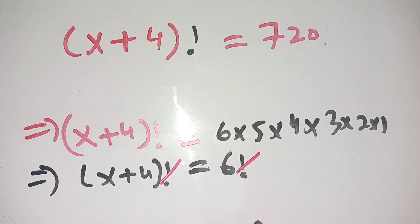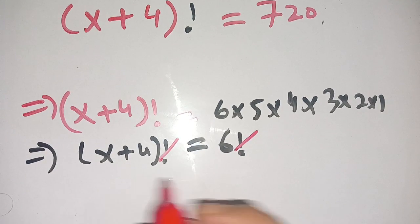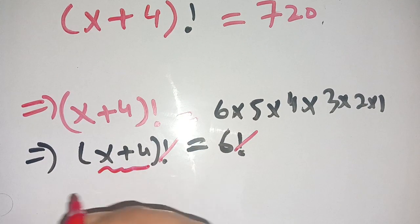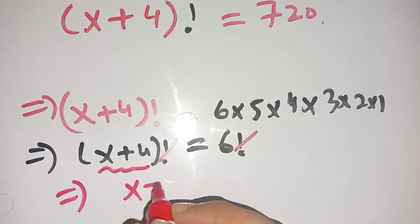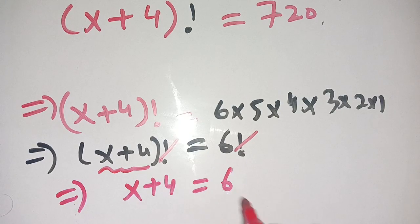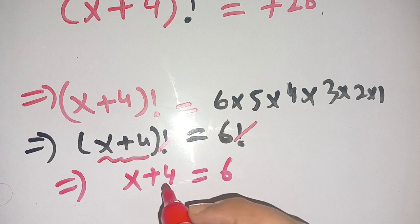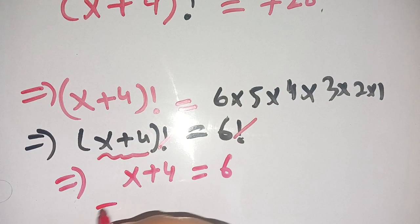Since x is equal to y, in place of x here is x+4, we get x+4 is equal to 6. On subtracting 4 from both sides, we get x is equal to 6 minus 4.